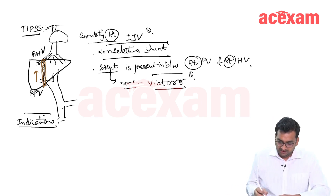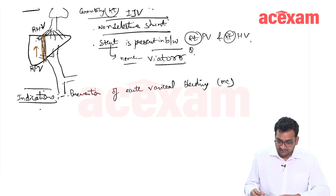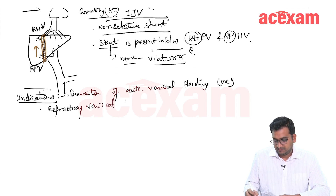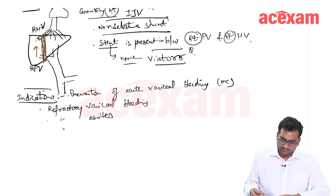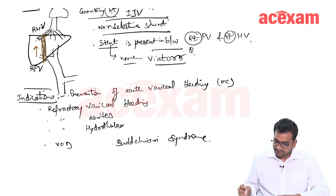The indications for TIPS: prevention of acute variceal bleeding — this is the most common indication. Other indications are refractory variceal bleeding, refractory ascites, refractory hydrothorax, veno-occlusive disease, and Budd-Chiari syndrome.